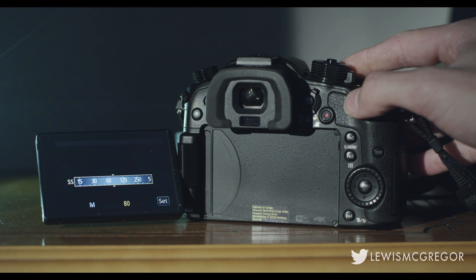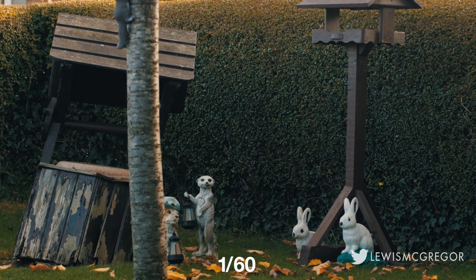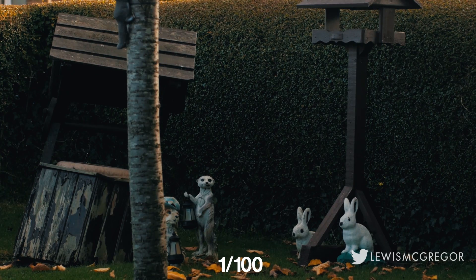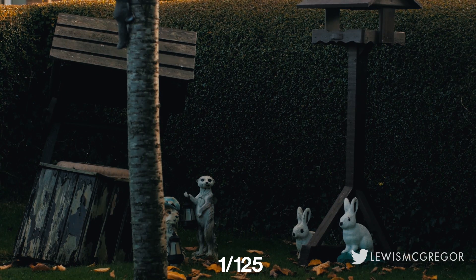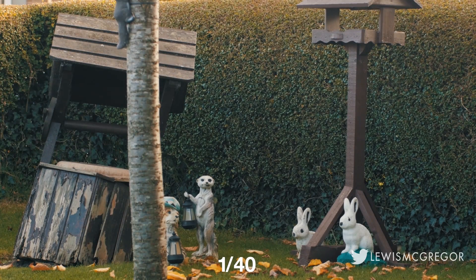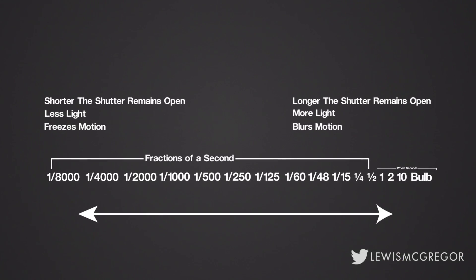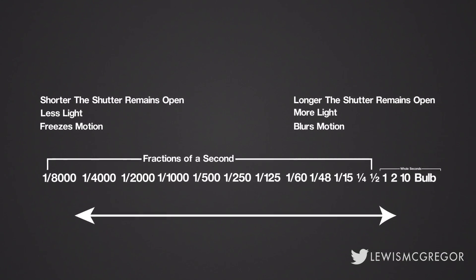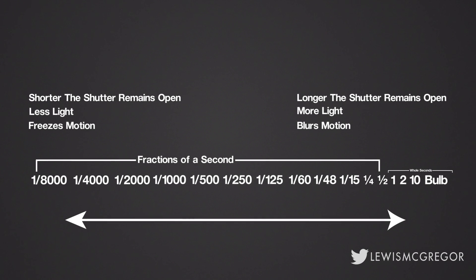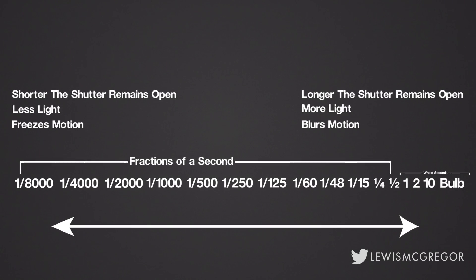But what does shutter speed do? Here we can see that our shutter speed is at 1 over 50, and as you increase or decrease the shutter speed, you may notice that it also increases and decreases the exposure. The higher the shutter speed, the less amount of time each frame is being exposed. The lower the shutter speed, the more time the frame is being exposed.